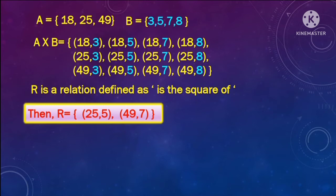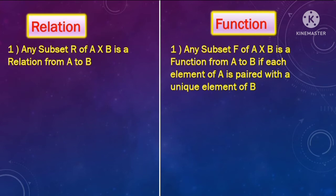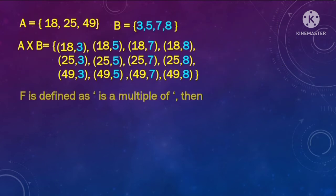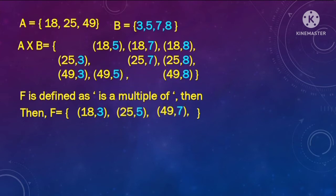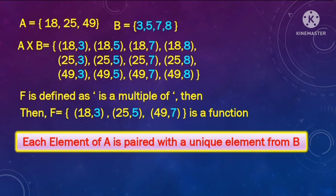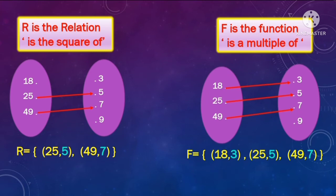Now let's see the definition of a function. A function is also a subset of the same Cartesian product A cross B, but the condition is that each and every element of the first set A has to be paired with a unique element of set B. For the same example, let's define a subset F called 'multiple of.' 18 is a multiple of 3, so that ordered pair will come in F. Also (25, 5) and (49, 7) will also be a part of set F. We can say that this set is a function because each and every element of set A has been paired with a unique element from set B. You can pictorially represent the relation and the function that we have just defined like this.